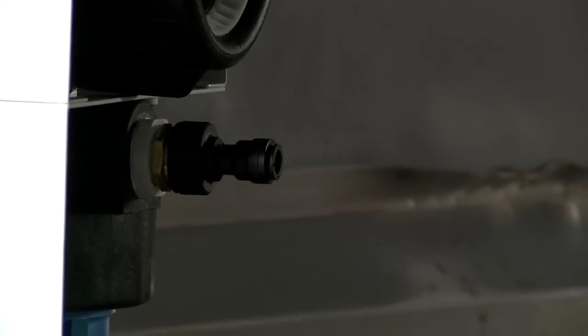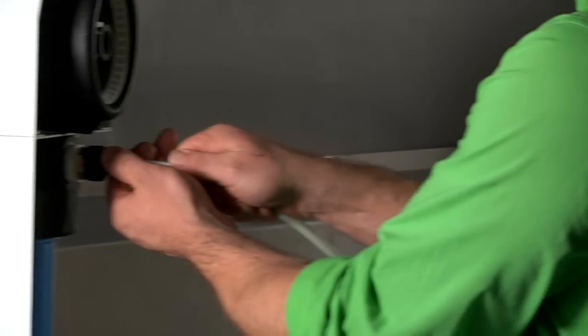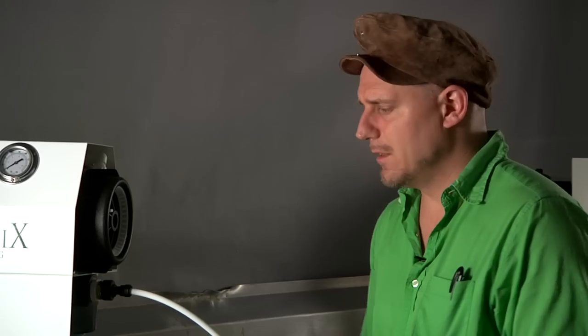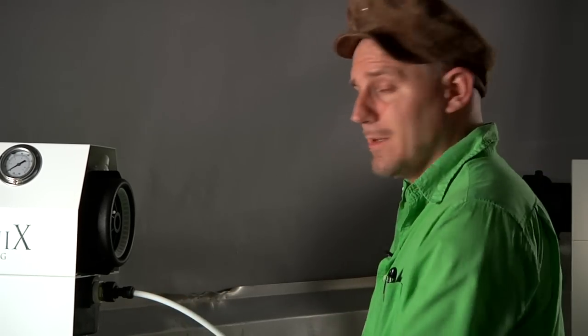Although I'm going to plumb this unit with three-eighths tubing, it's recommended that you plumb it with half-inch or at least a garden hose to get more flow to this unit. But it will work fine with three-eighths tubing, especially if you're going to use a booster pump. So here we are plumbed in.